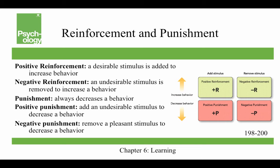Negative punishment is when you remove a pleasant stimulus to decrease a behavior. So if a child is crying, you might take away a favorite toy to make them cry less. Now, punishment has its problems — children might become fearful of the punisher, and they may become aggressive and antisocial. So if you have kids, you really want to favor reinforcement over punishment.